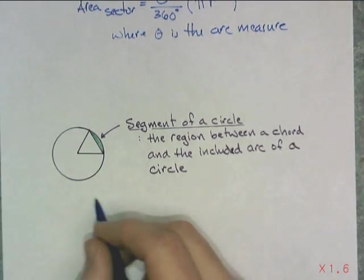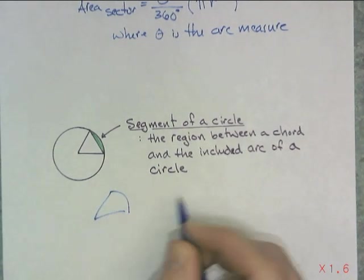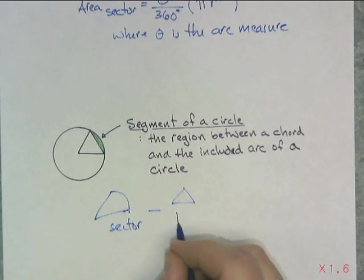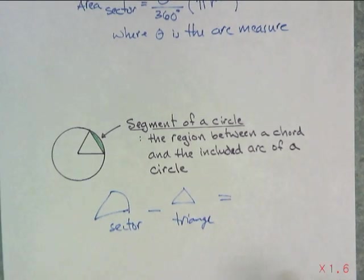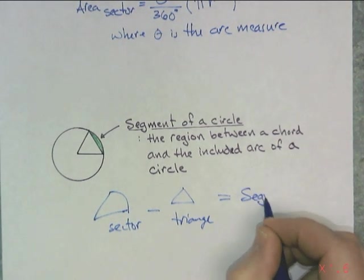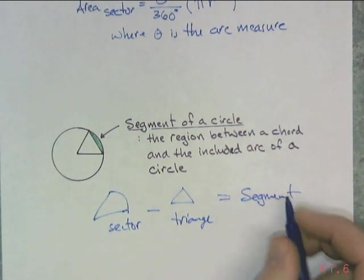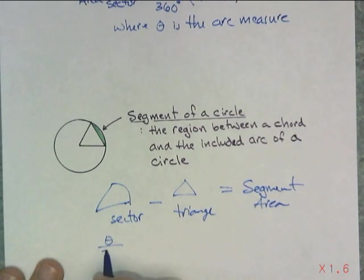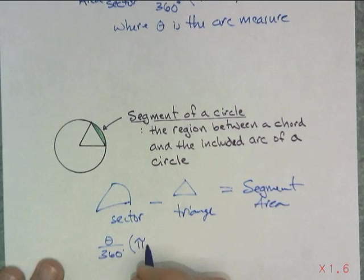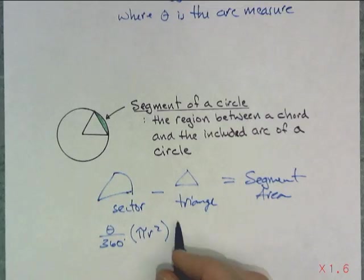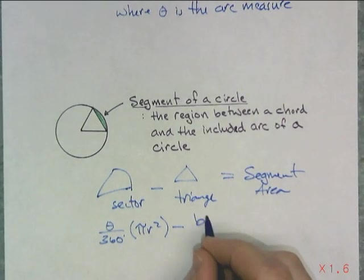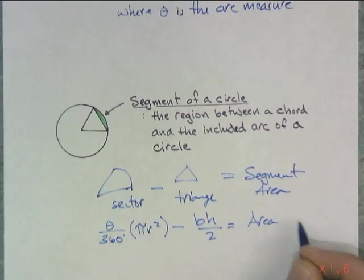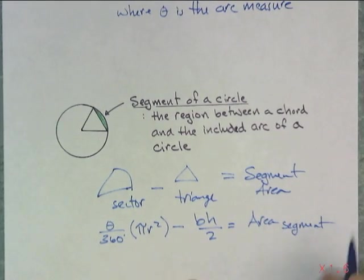And as you might could tell, we're going to take a sector, subtract a triangle, and then what's left over is the segment. Sector is theta over 360 πr² minus a triangle. A triangle is of course base times height divided by two. And that's going to be the area of the segment. That's about as good as I can get for a formula.